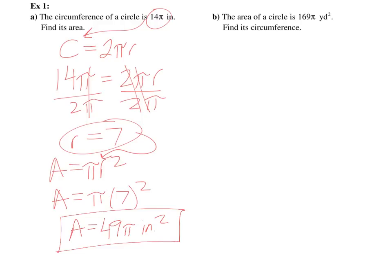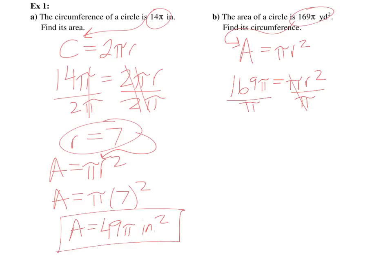For the next problem, the area of a circle is 169 pi yards squared. The area formula is pi r squared. They give me the area, so let's plug that in and solve for r. Divide by pi — I have 169 is equal to r squared. So r is equal to 13.